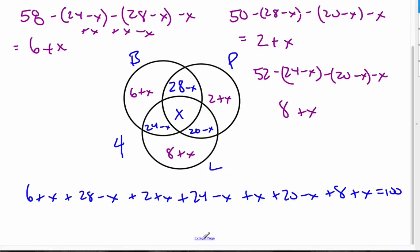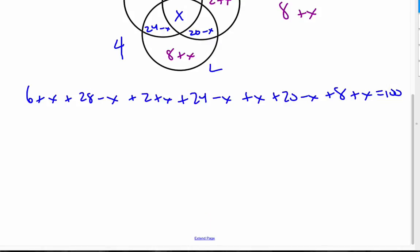And so now it's a matter of just collecting like terms and solving for X. If I put these together, 6 plus the 28 plus 2 plus 24 plus the 20 plus 8 is 88. Similarly, the X terms cancel out, those cancel, those cancel, and those cancel. And so I'm just left with plus X plus X equals 100, and so X is equal to 12.